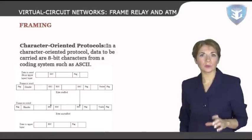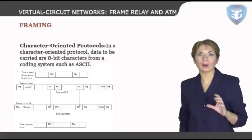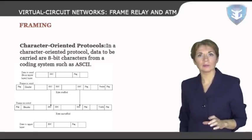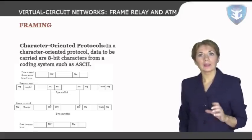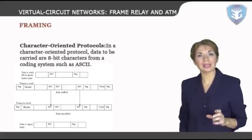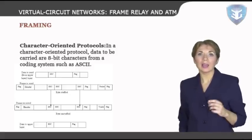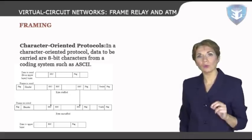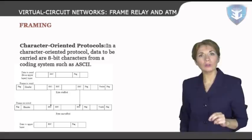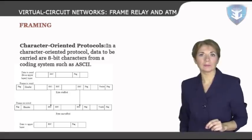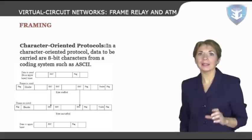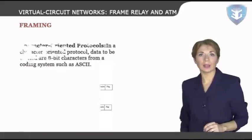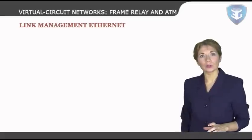Character-oriented protocols: in a character-oriented protocol, data to be carried are 8-bit characters from a coding system such as ASCII. The header, which normally carries the source and destination addresses and other control information, and the trailer, which carries error detection or error correction redundant bits, are also multiples of 8 bits. To separate one frame from the next, an 8-bit flag is added at the beginning and the end of a frame.